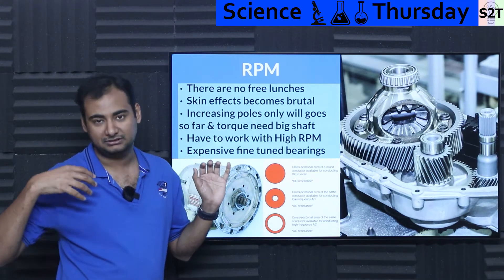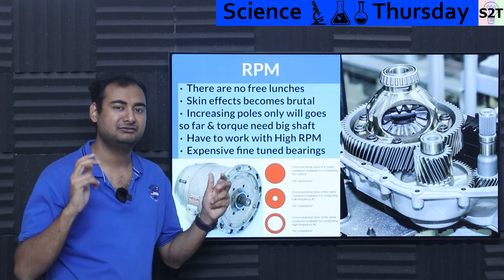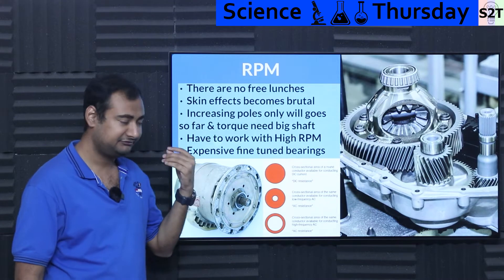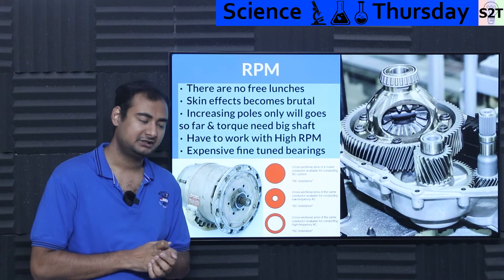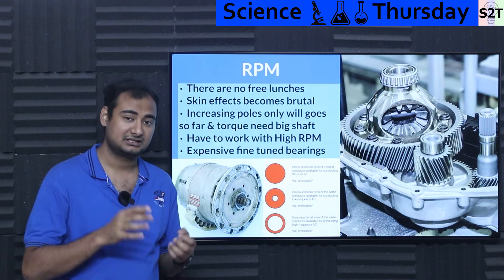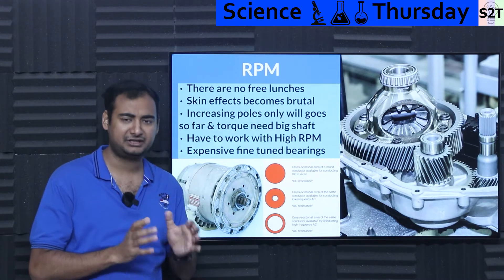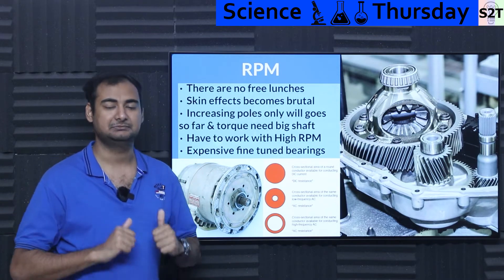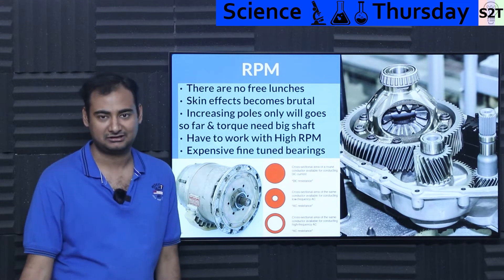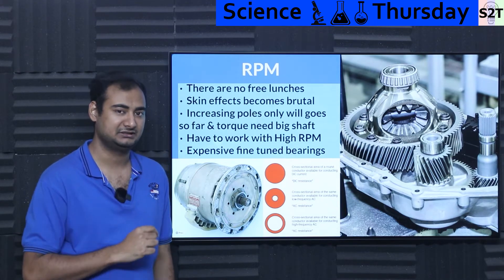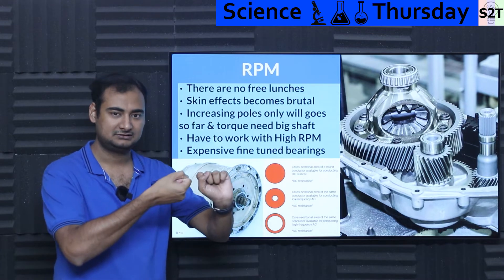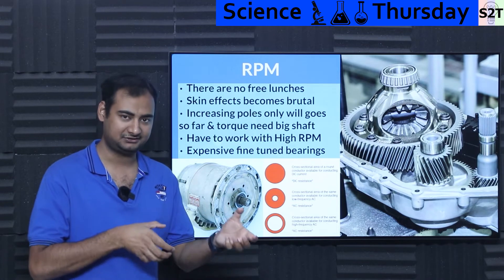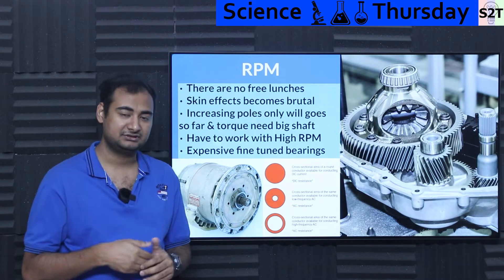If you keep increasing the poles, you have to deal with the fact that your shaft will become very thick and very heavy because the torque requires it. Even if you use advanced 3D printing manufacturing technology to make a really good stator with 14 poles and achieve great power density — how do you deal with the torque? You can't use the small slender shaft you see in other motors because it will break the moment you apply that much horsepower — say 500 horsepower.